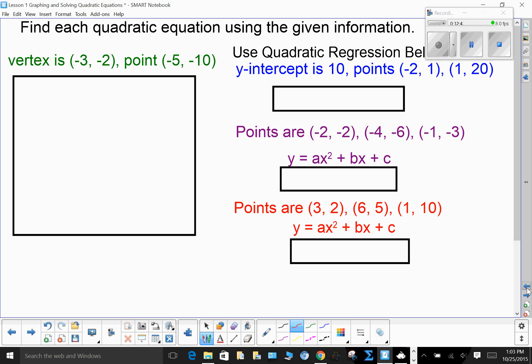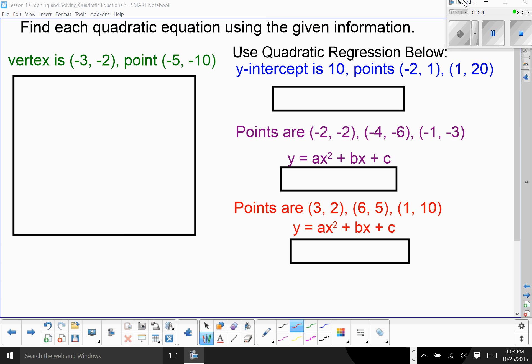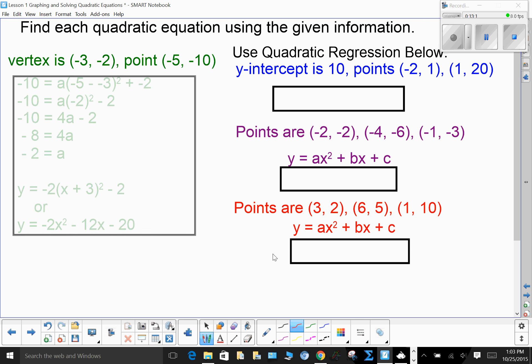Okay. Find each quadratic given the information below. Okay. Here, it says use quadratic regression for these. For this one, I gave you the vertex and a point. Pause. Try it. See what you get. Really, pause. Try it. You've got to practice this. Okay. We're back. Take a look.